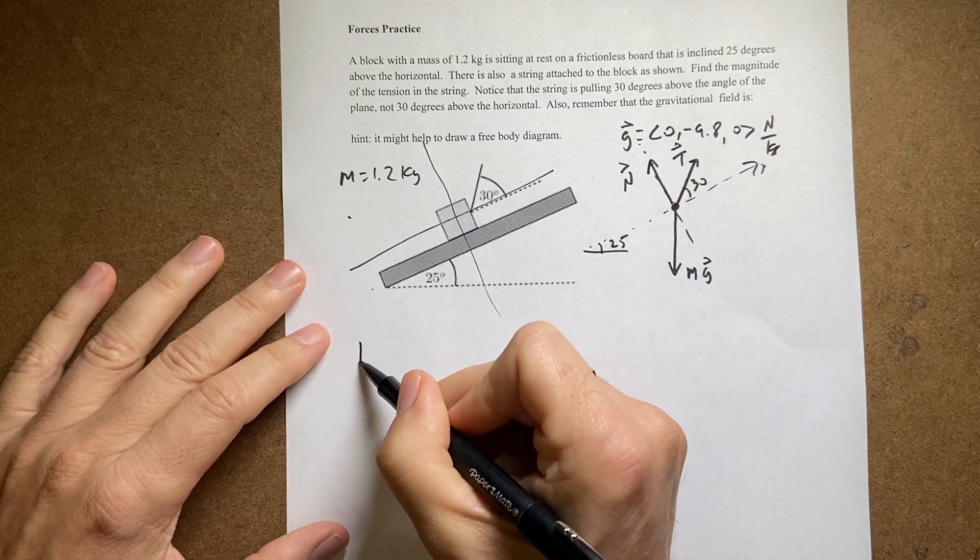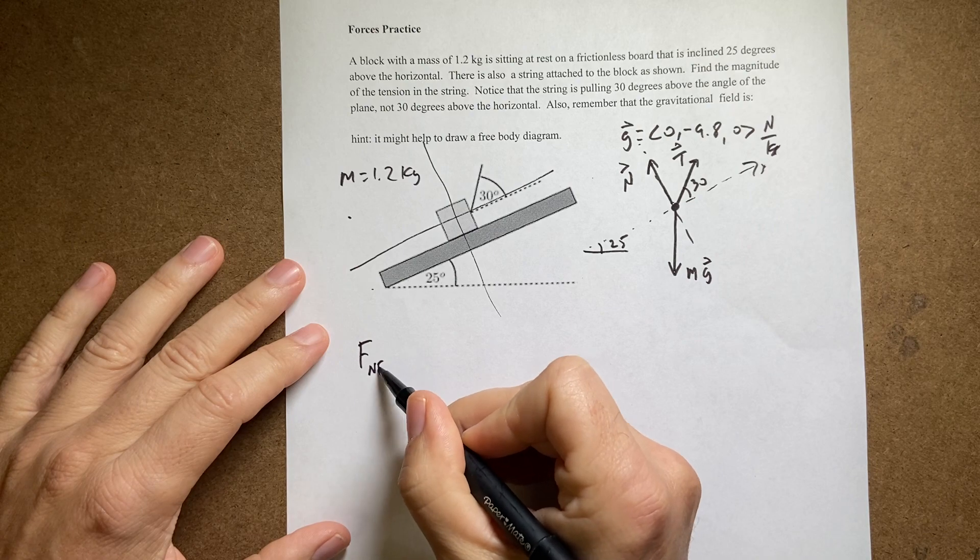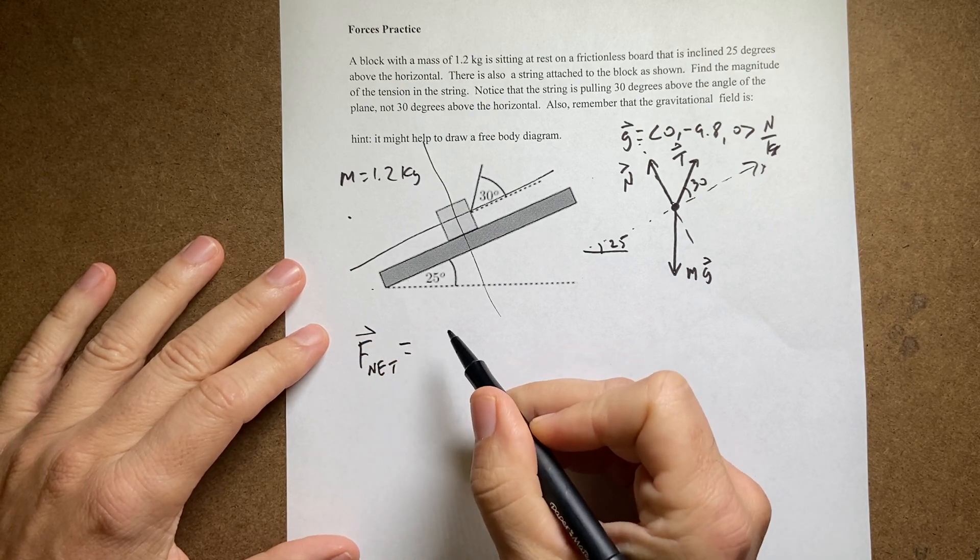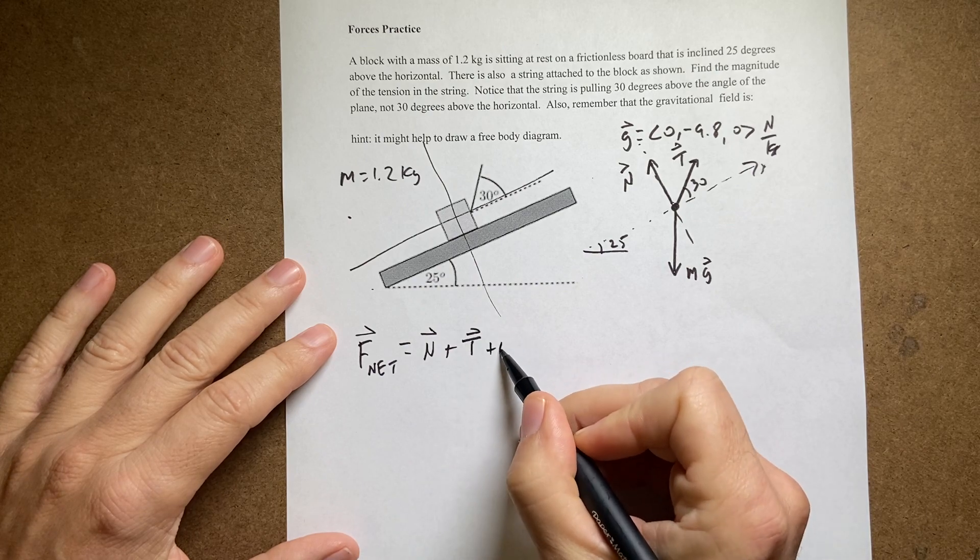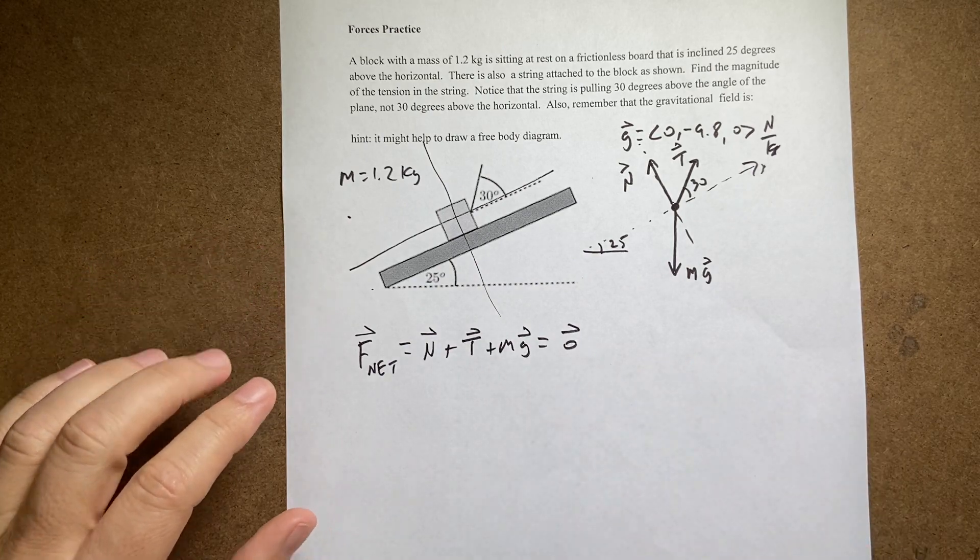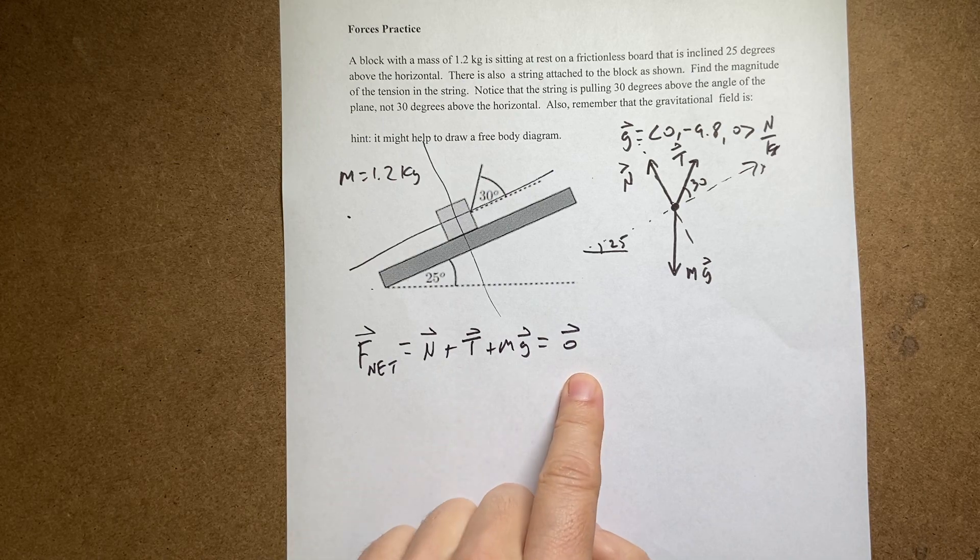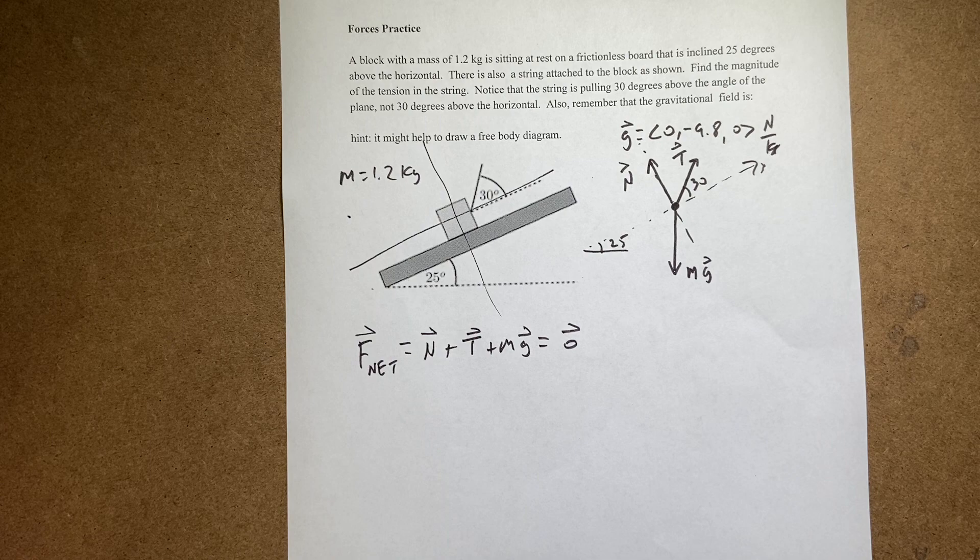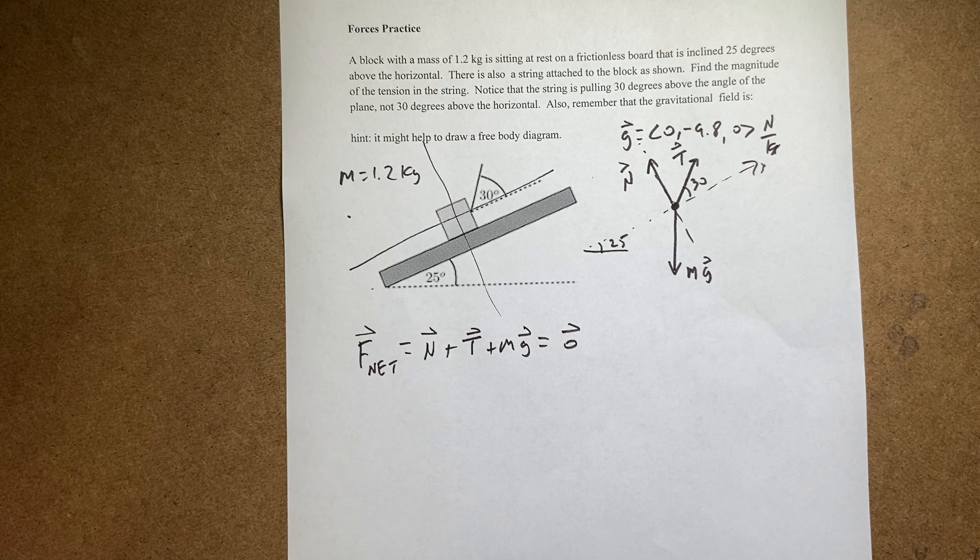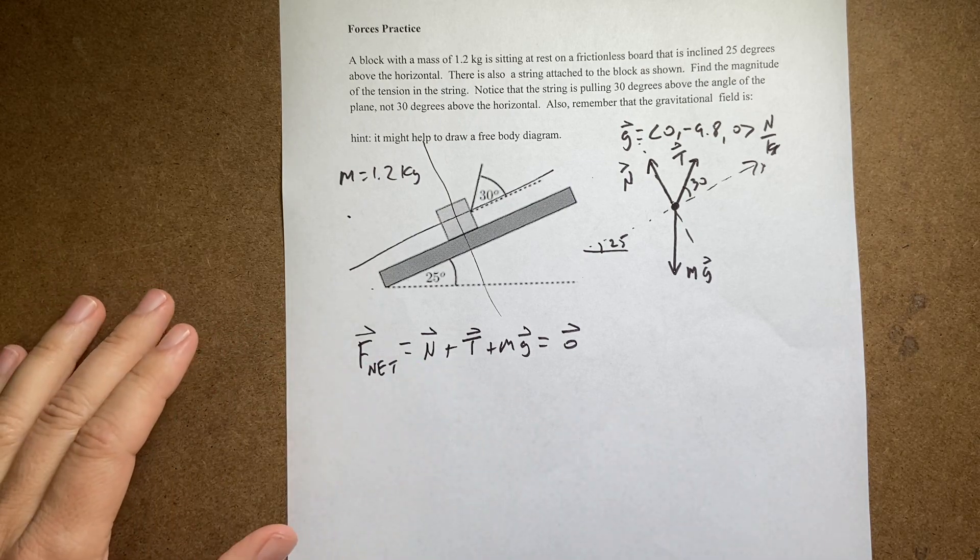Since it's in equilibrium I can write the following. F net equals n plus t plus mg equals 0. So if I add up all the forces they have to add up to 0. Now we don't write these as negatives. They may have a negative component but as a vector equation we write it like that.